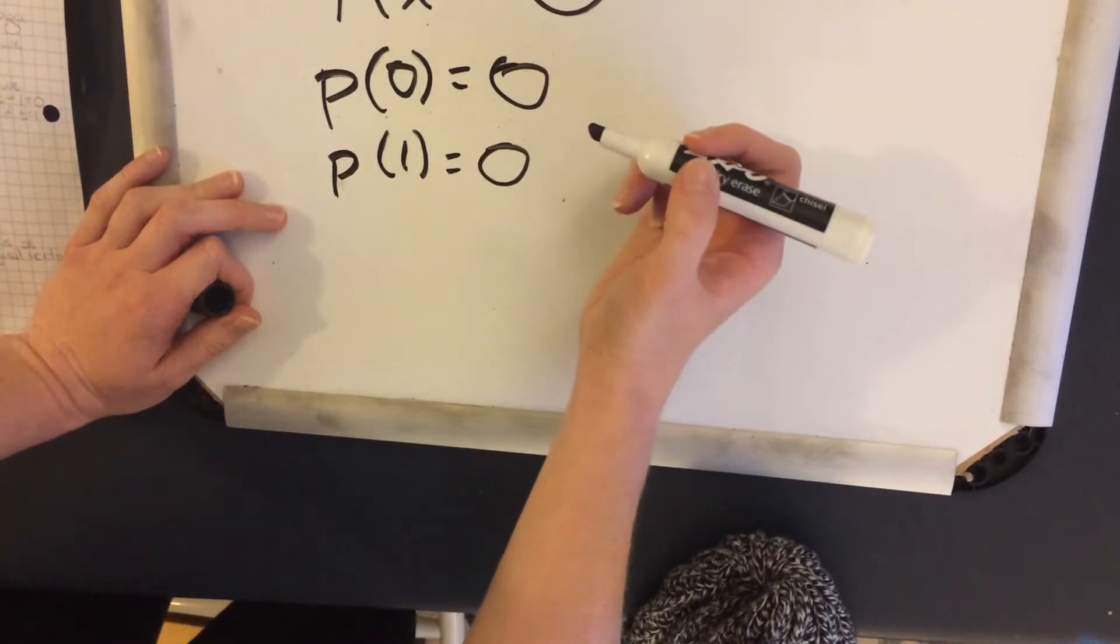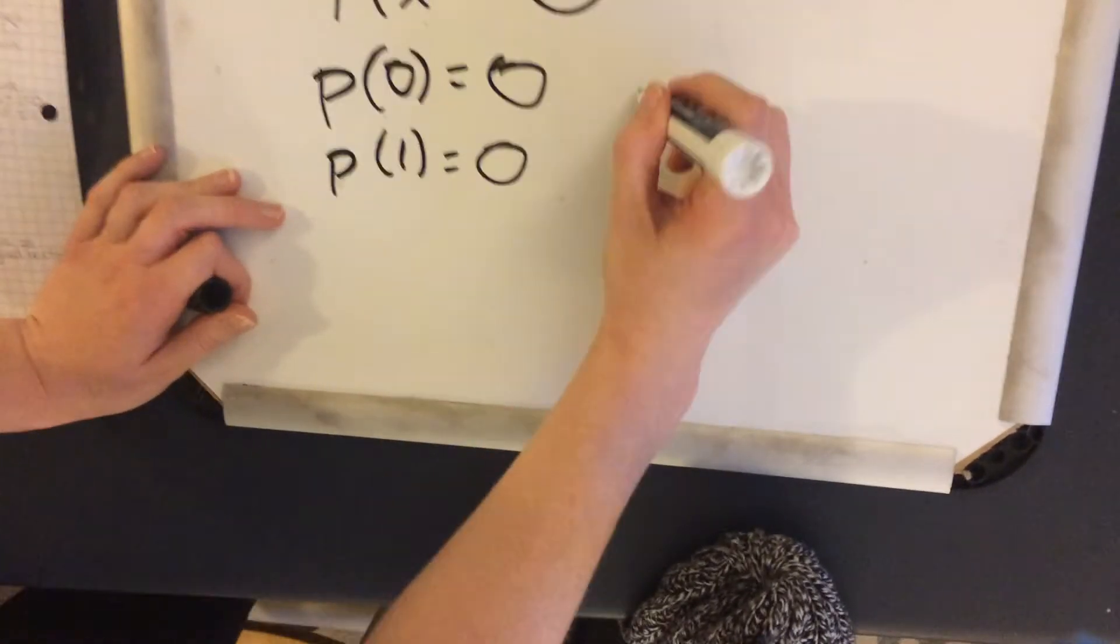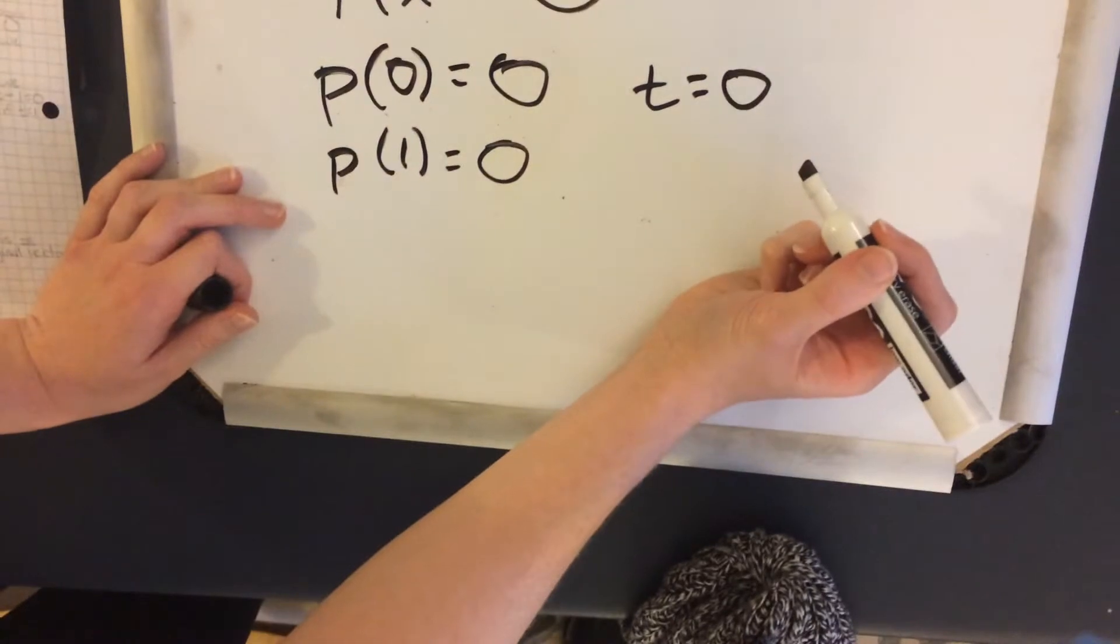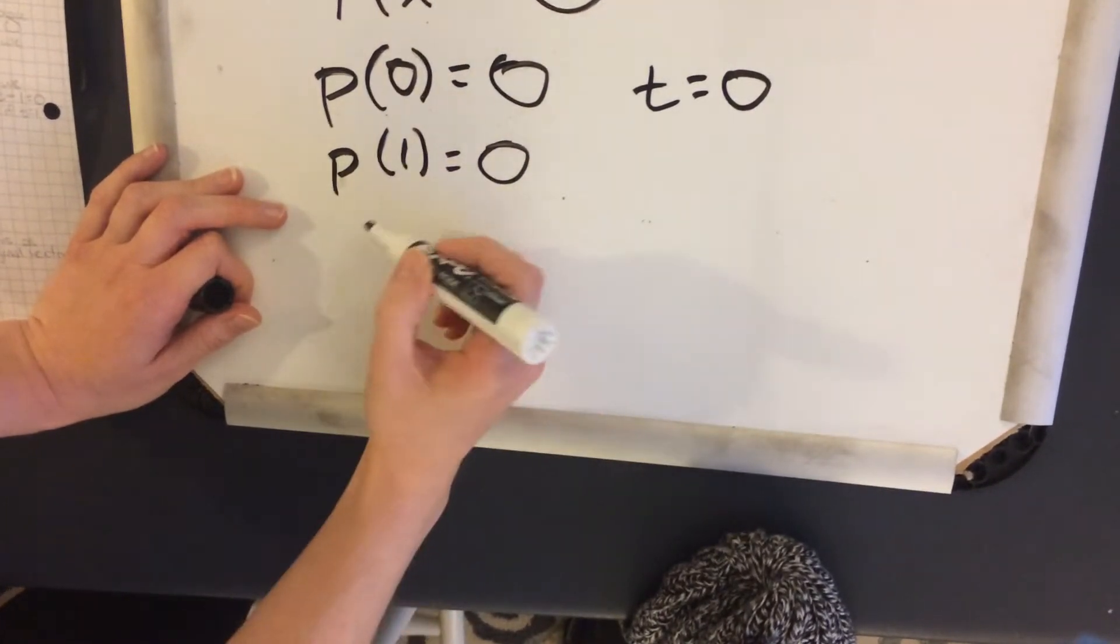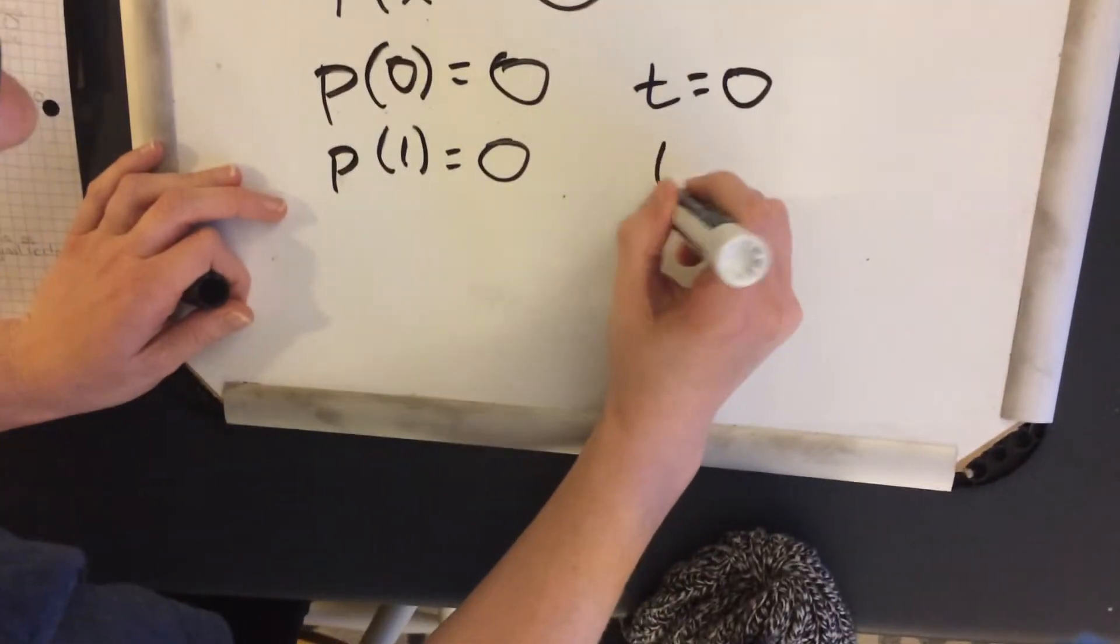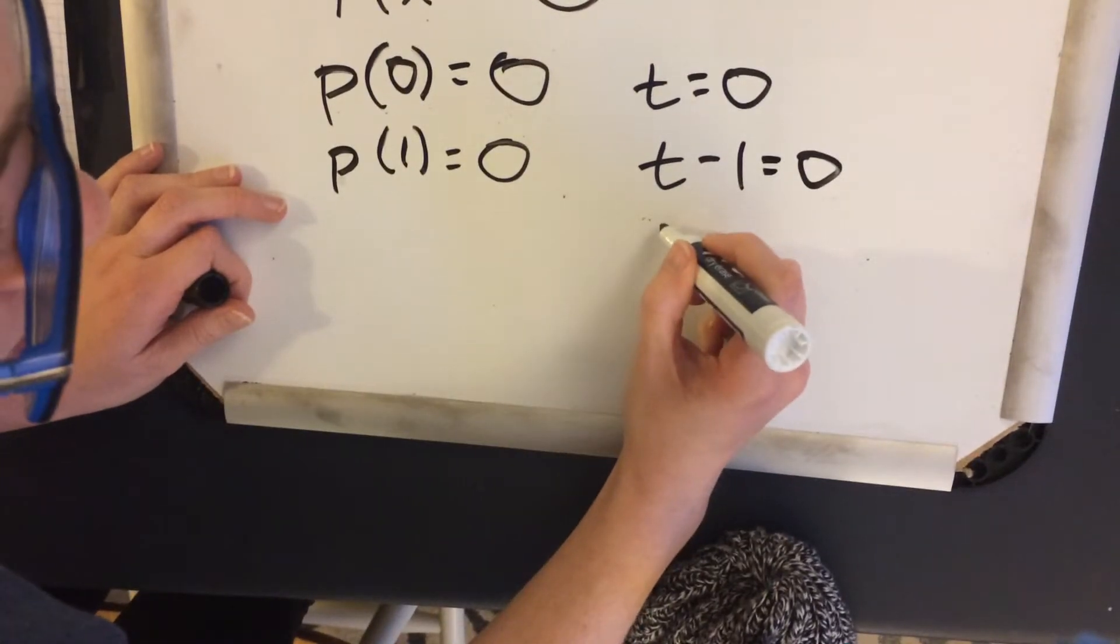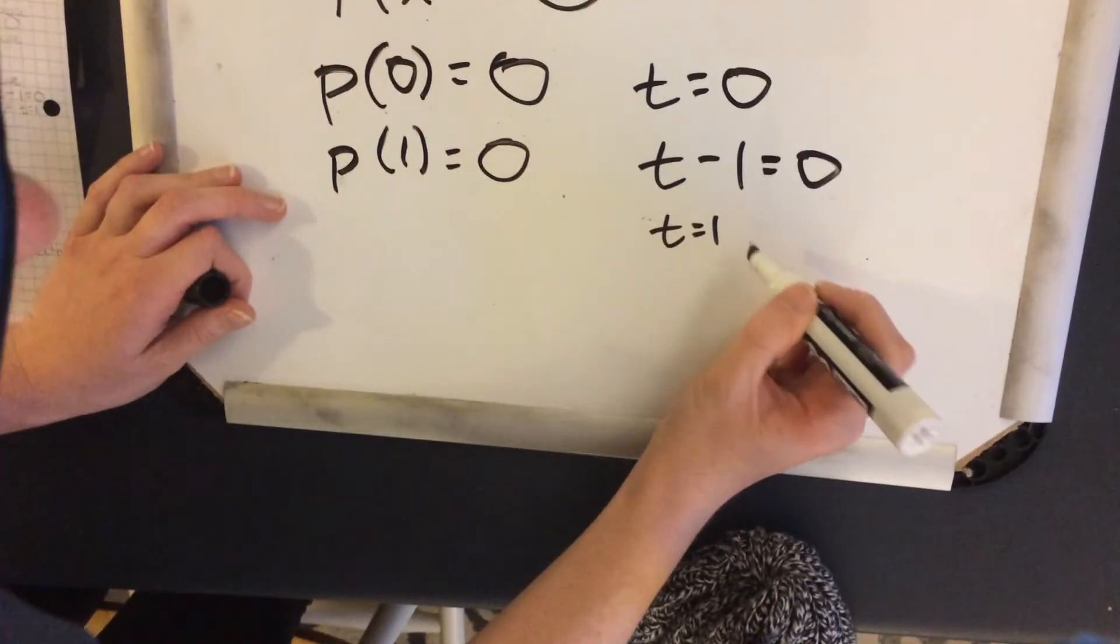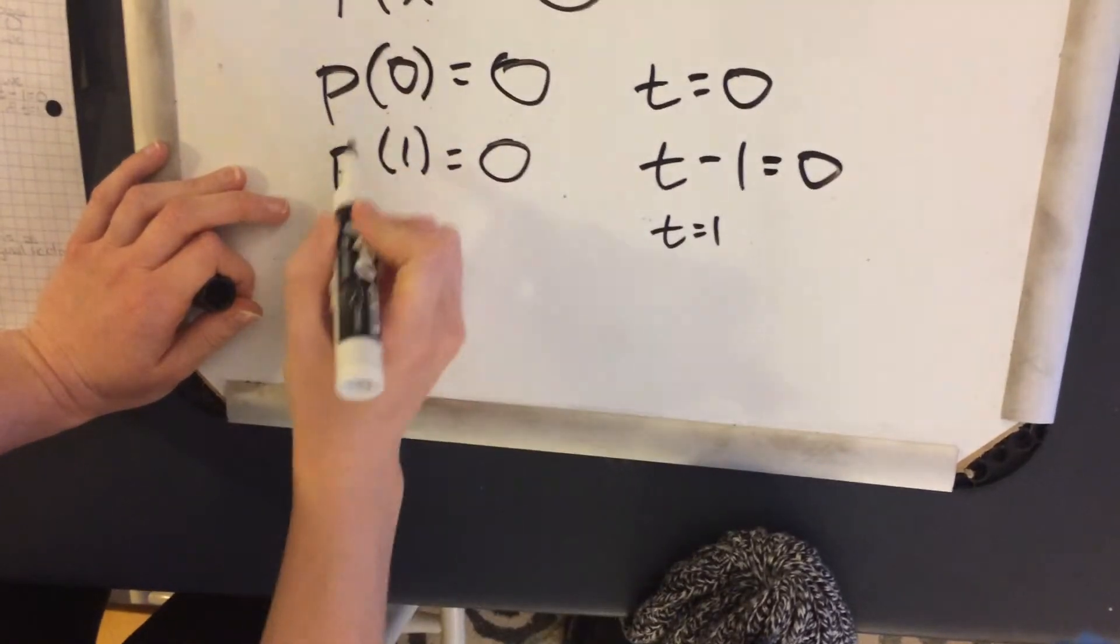So trying to come up with a polynomial where p(0) equals zero, you can simply say that t equals zero, right? So p(t) equals zero in this case. And for p(1) equals zero, to actually create some polynomial, we could do something like t minus one equals zero. In which case, if t equaled one, this would be true. So we need a scenario where both of these are true.